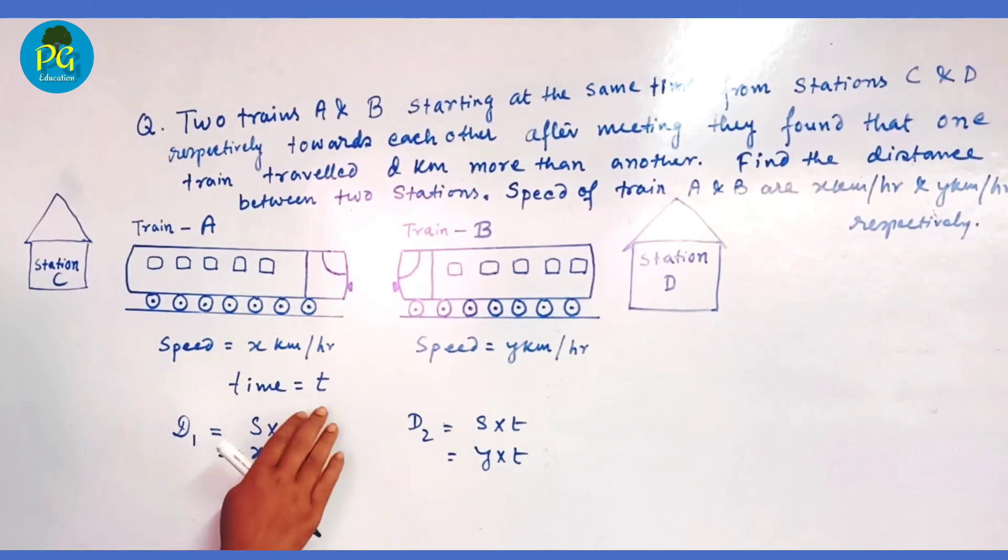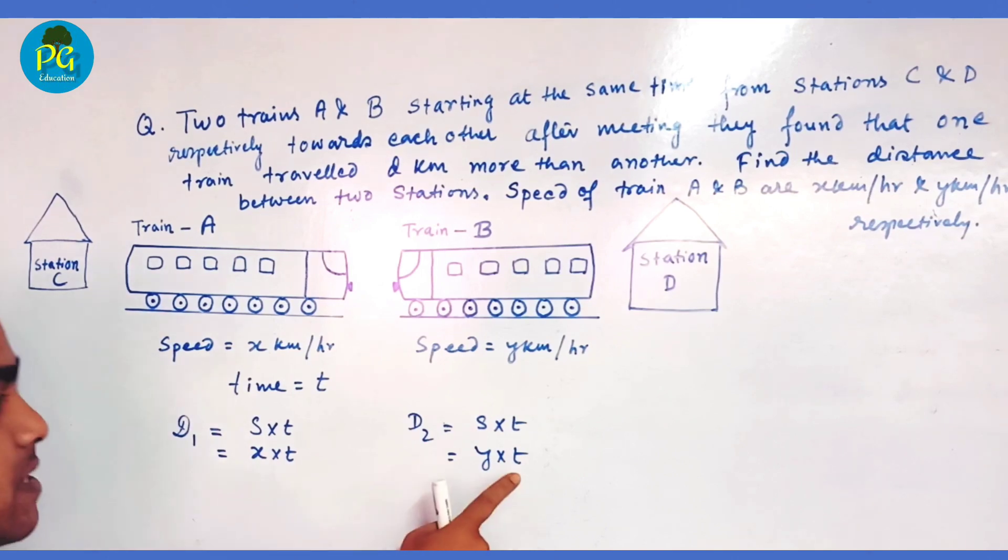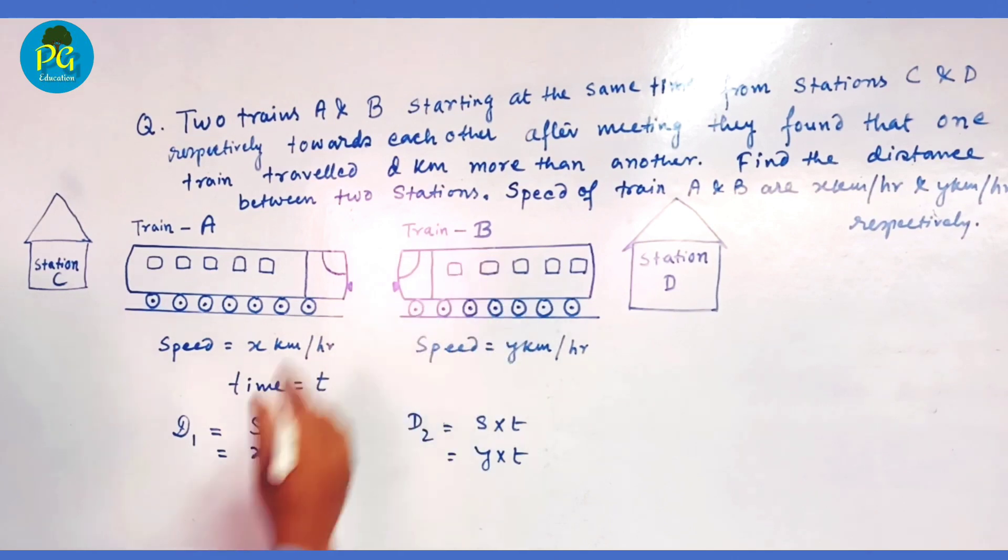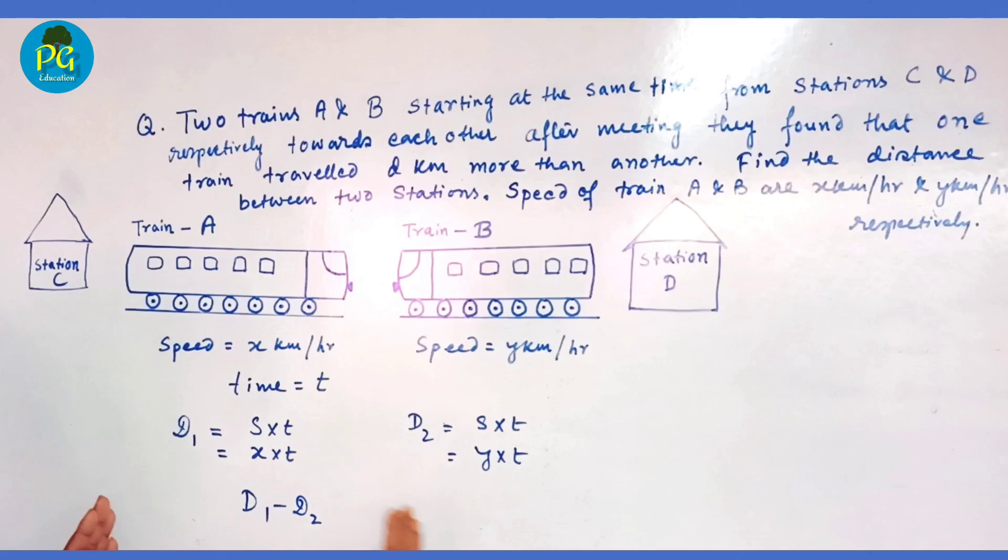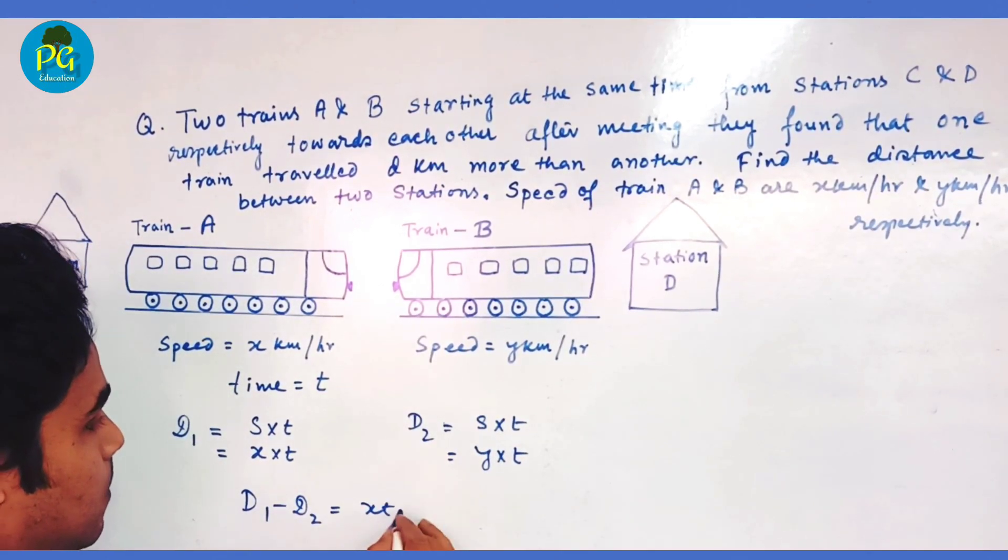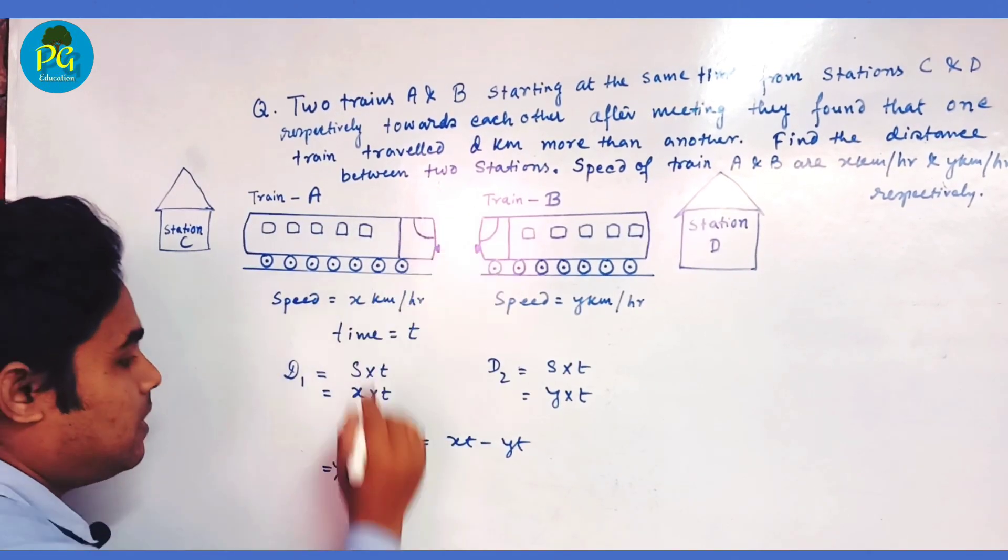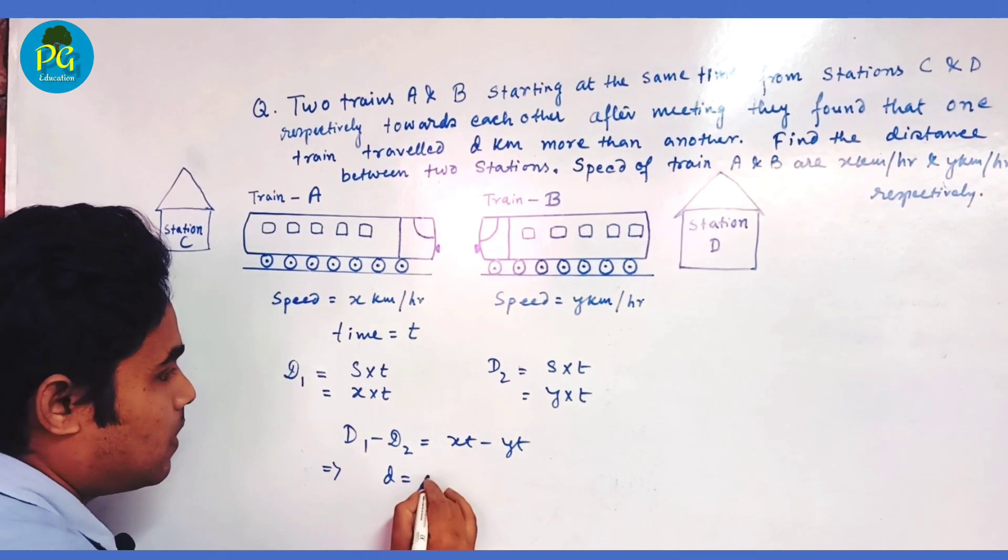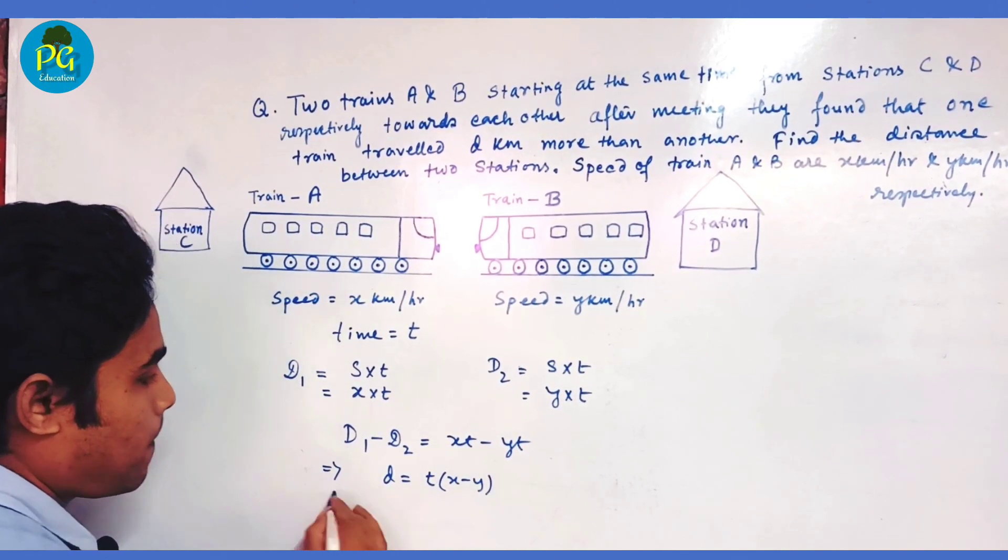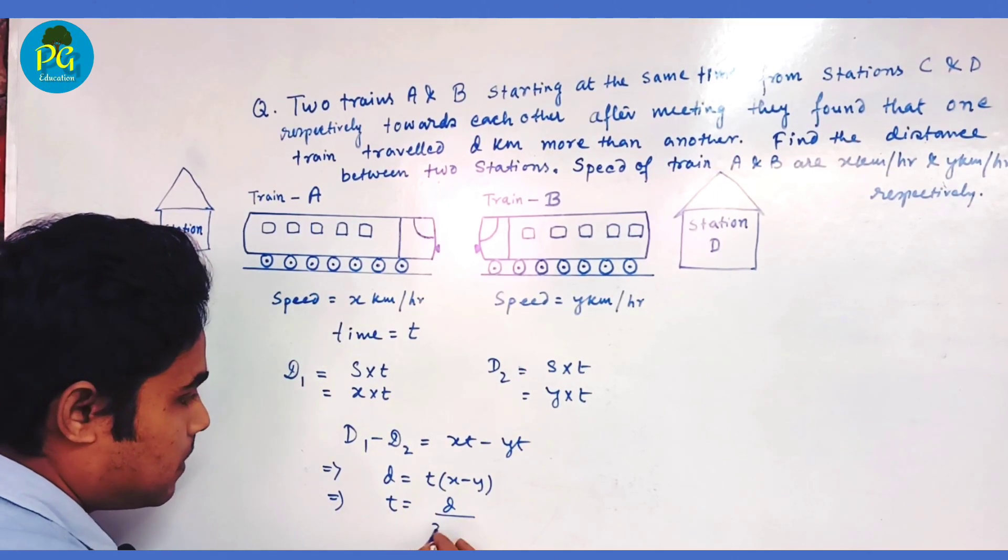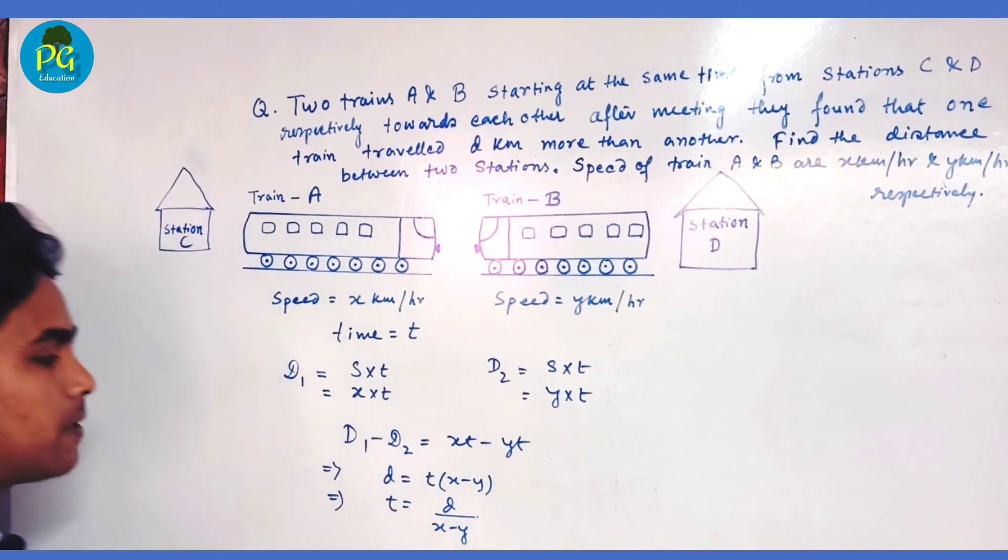Since in both cases time is the same, it is given that one train has traveled D kilometers more than another. So D1 minus D2, the difference of the distance traveled by A and B, equals XT minus YT. This is equal to D, so D equals T(X minus Y), which implies T equals D divided by (X minus Y).